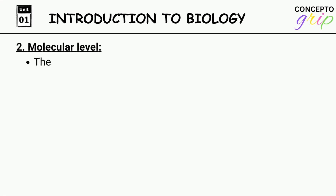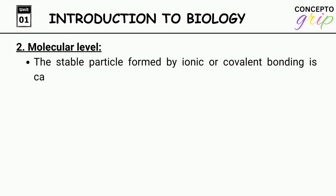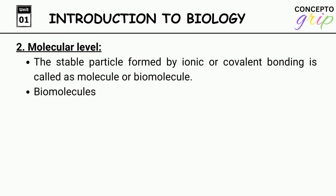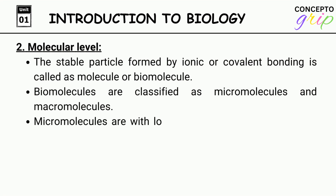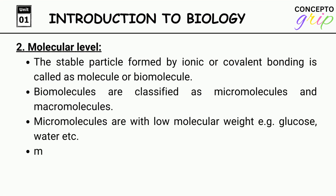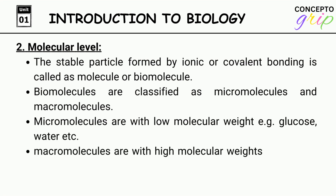Level 2 — Molecular level. The stable particle formed by ionic or covalent bonding is called a molecule or biomolecule. Biomolecules are classified as micromolecules and macromolecules. Micromolecules are with low molecular weight, for example glucose, water, etc. Macromolecules are with high molecular weight, for example starch, proteins, lipids, etc.